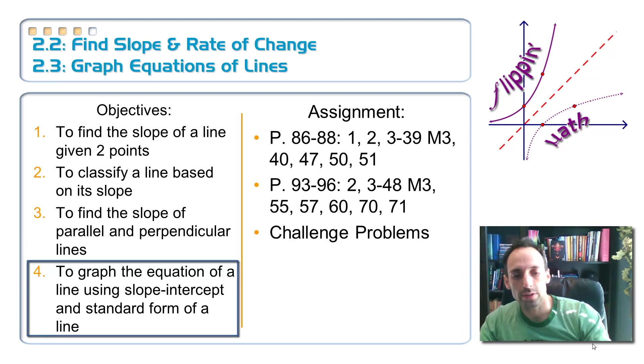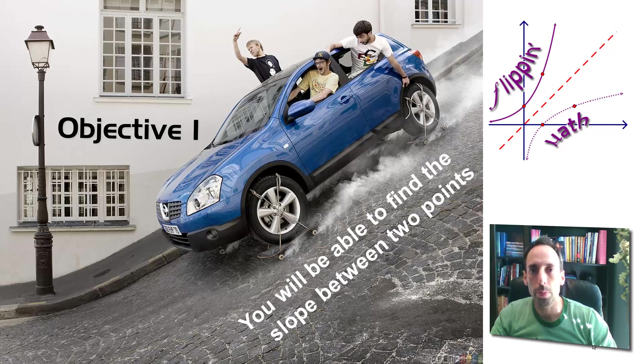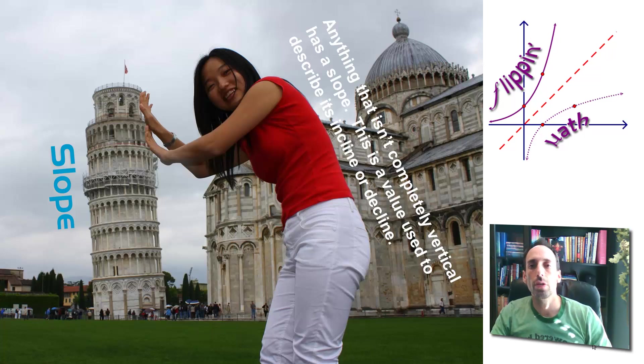So let's go ahead and get started here with finding slope between two points. And of course, the picture is illustrating slope, something that's not perfectly vertical. It's sloped. It's got some sort of incline. And that looks like maybe a little bit too much fun in that picture. Okay, so slope, anything that isn't completely vertical has a slope. And that's just a number that we use to describe its steepness, its level of incline or decline.